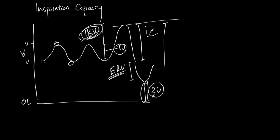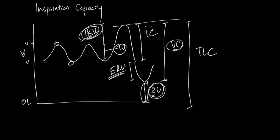Forced maximum all the way down to forced minimum is going to give you the vital capacity. When you're alive, this is the amount of air that you can control. If you add this residual volume to the vital capacity, you get the whole thing — and that is your total lung capacity. It's literally how much air you can squeeze into your lung with an air pump.